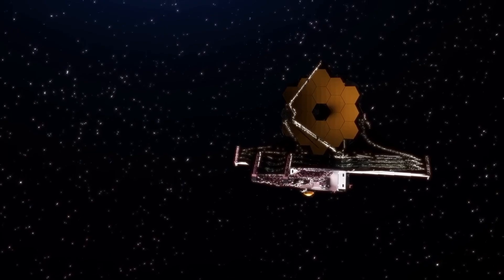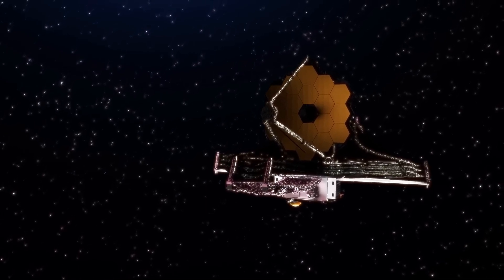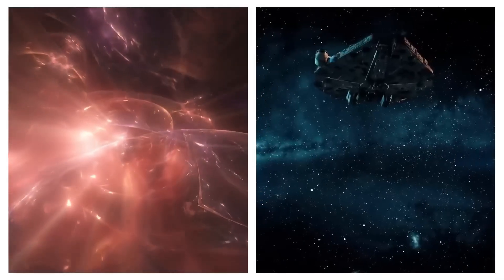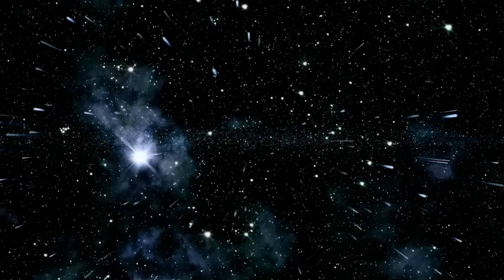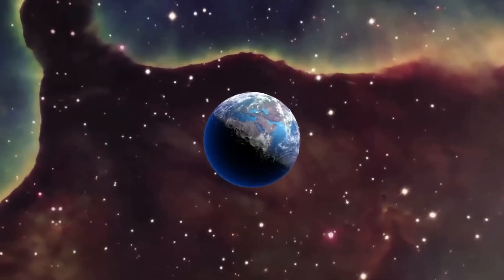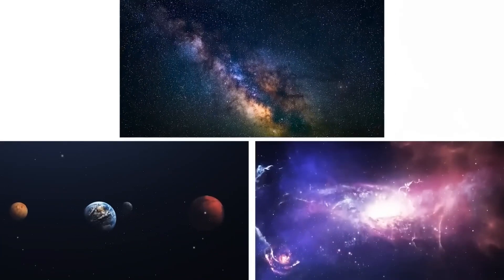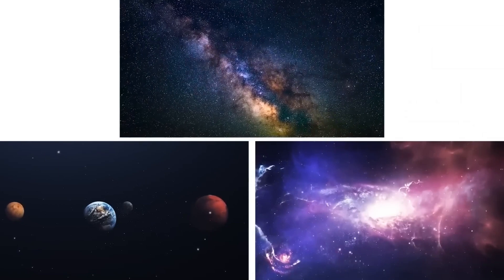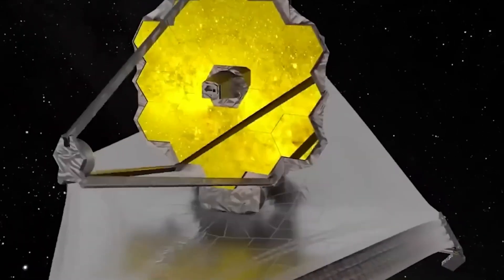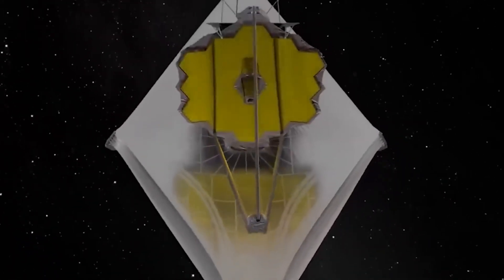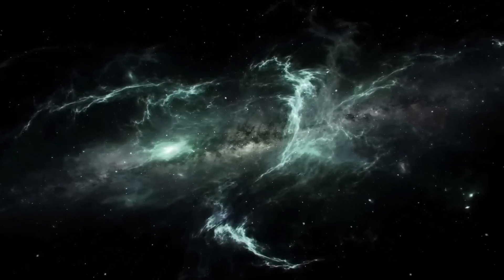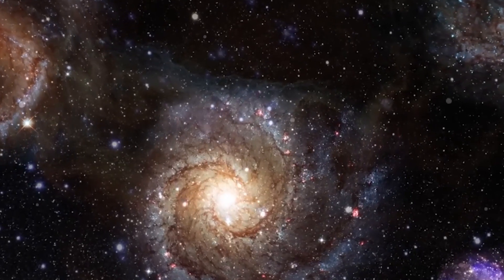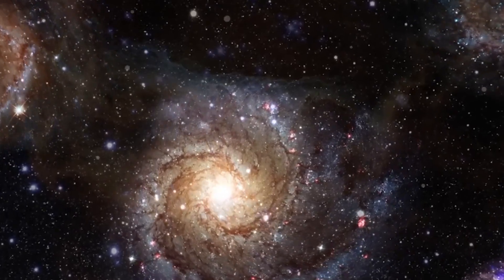Is dark matter real? It is believed that dark matter, a hypothetical type of stuff, accounts for about 85% of all matter in the universe. It is difficult to directly detect because it does not interact with light in the same way as ordinary matter, hence the name dark. Its gravitational pull on observable matter and the way it bends light from far-off objects suggest its presence.